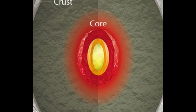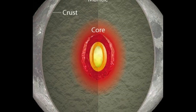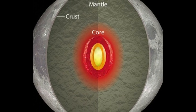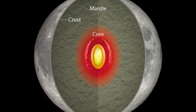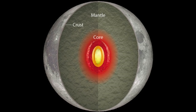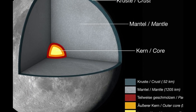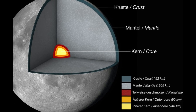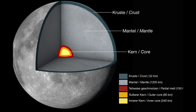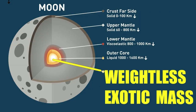The moon's interior is made up of a dense core, a mantle, and a crust. The core is the densest part of the moon and is made up of iron and nickel. The mantle is the layer between the core and the crust and is made up of rocks. The crust is the outermost layer of the moon and is made up of rocks and regolith.